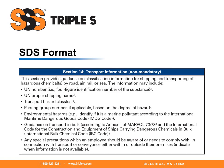Section fourteen, transportation information. Again, non-mandatory under OSHA but mandatory under DOT and global harmonization. This section provides guidance on classification information for shipping and transporting of hazardous chemicals by road, air, rail, or sea. The information may include UN number, UN proper shipping name, transportation hazard classes, packaging group numbers if applicable, environmental hazards, guidance on transport in bulk, and any special precautions which an employee should be aware of or needs to comply with in connection with transportation or conveyance either within or outside their premises.